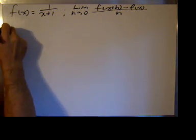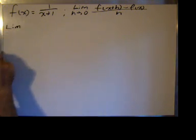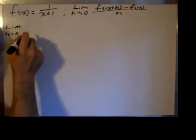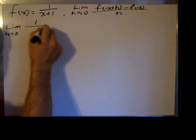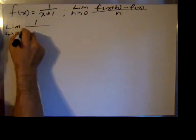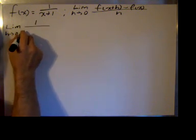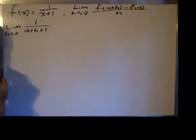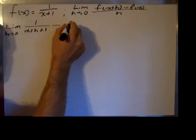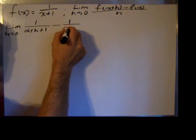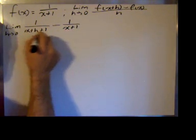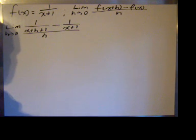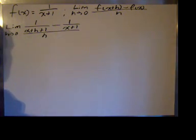So we'll begin by writing the limit as h approaches 0 of 1 divided by — and I'm going to put x plus h everywhere I have an x in the original function — so x plus h plus 1, don't forget the plus 1, minus f of x, which is just 1 over x plus 1, all divided by h. I now have a compound fraction.